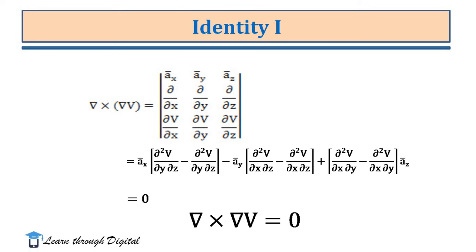Next, we take the curl of del V. Del cross del V is written as a determinant where the first row is the unit vectors, the second row is the del operator, and the third row components are dou V/dou x, dou V/dou y, dou V/dou z. Now we find the determinant of this matrix. First, we write the Ax component: it is dou²V/dou y dou z minus dou²V/dou y dou z.